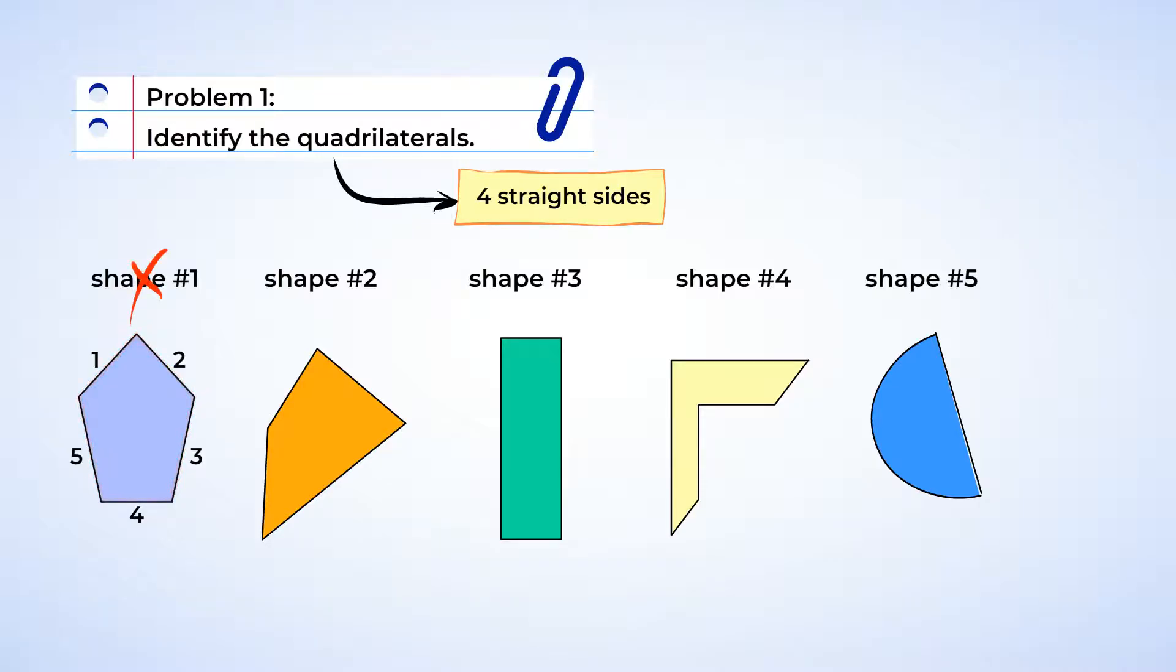Alright, next shape two. Starting at this side, we count and find that it has four sides. Nice! Shape two is a quadrilateral.